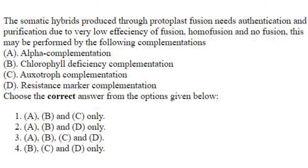Somatic hybrids produced through protoplast fusion need authentication and purification due to the very low efficiency of fusion, homofusion, and no fusion. This may be performed by complementation methods. Alpha complementation is not used here, as it is used for protein-protein interaction or gene expression analysis. Chlorophyll deficiency complementation, auxotroph complementation, and resistance marker complementation can be used. The answer is option 4: B, C, D only.